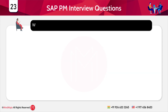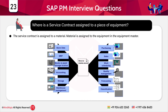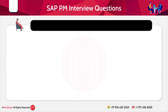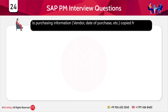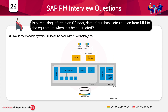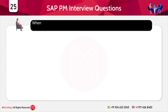Where is a service contract assigned to a piece of equipment? The service contract is assigned to a material, and the material is assigned to the equipment in the equipment master. This functionality is not intended for managing equipment bought from vendors where you are receiving service rather than providing it. Is purchasing information such as vendor or date of purchase copied from MM to the equipment when created? Generally it doesn't happen in the standard system, but it can be done with ABAP batch jobs.